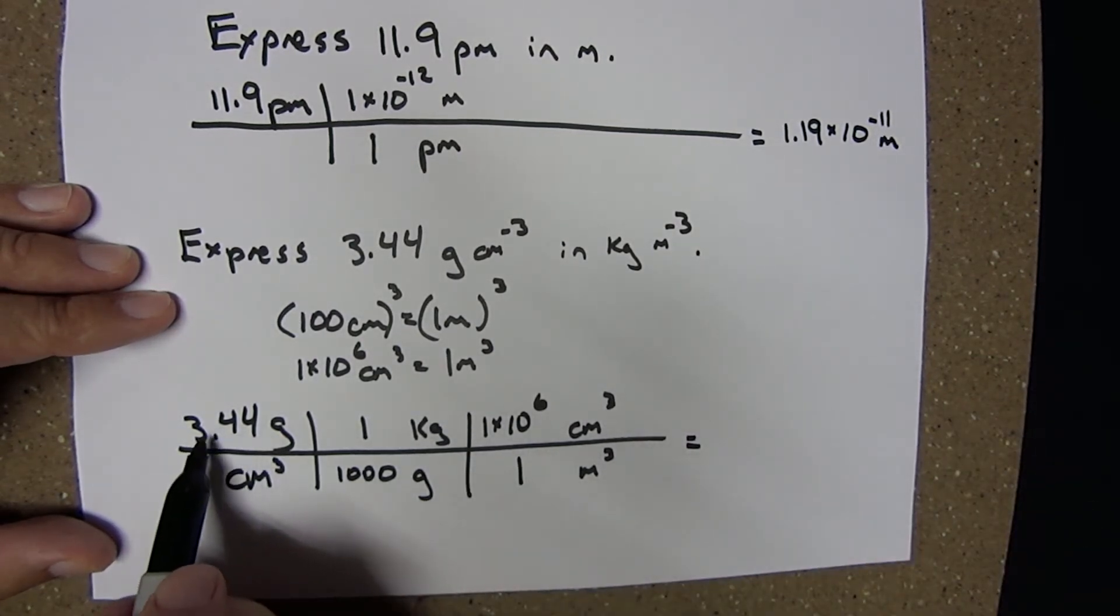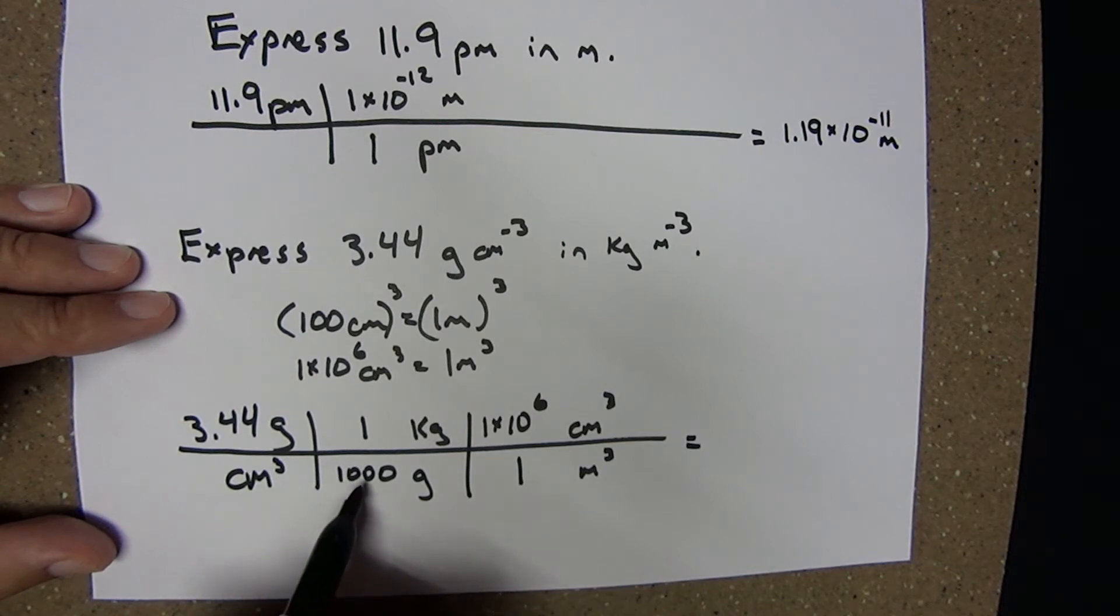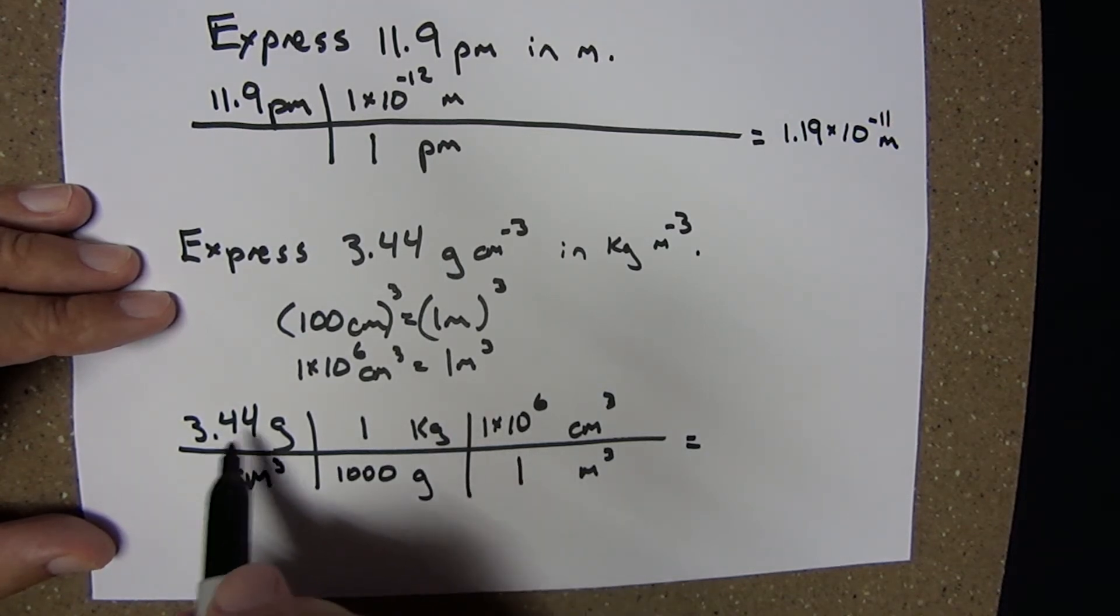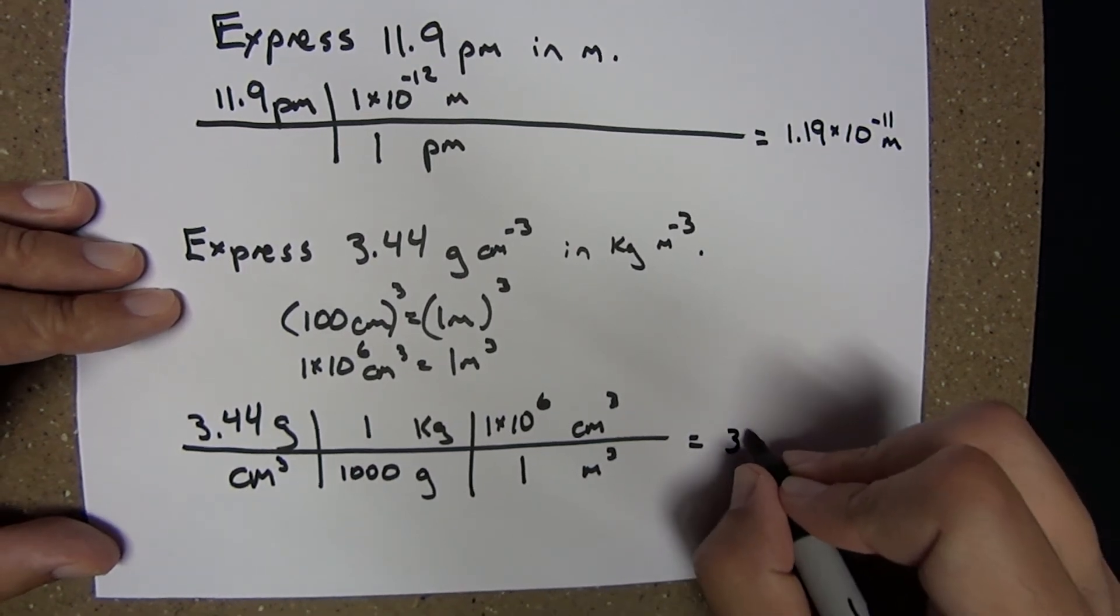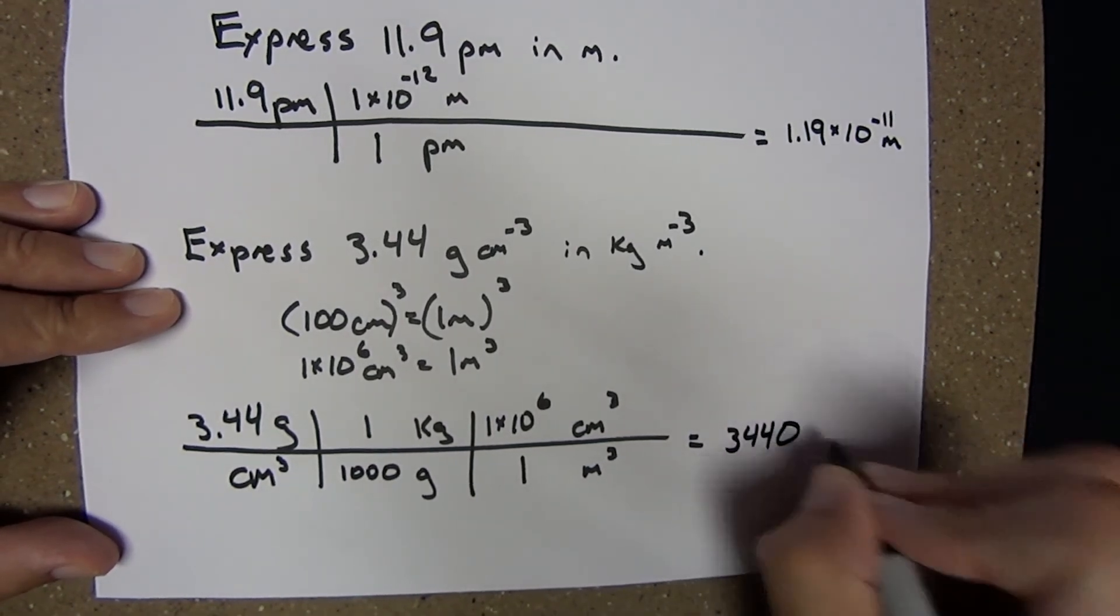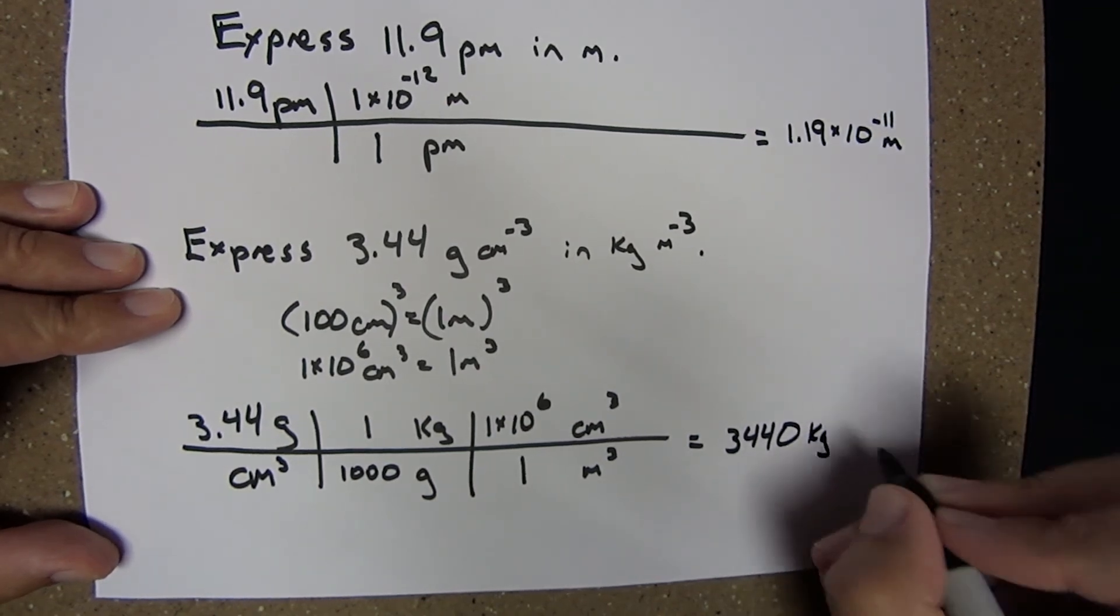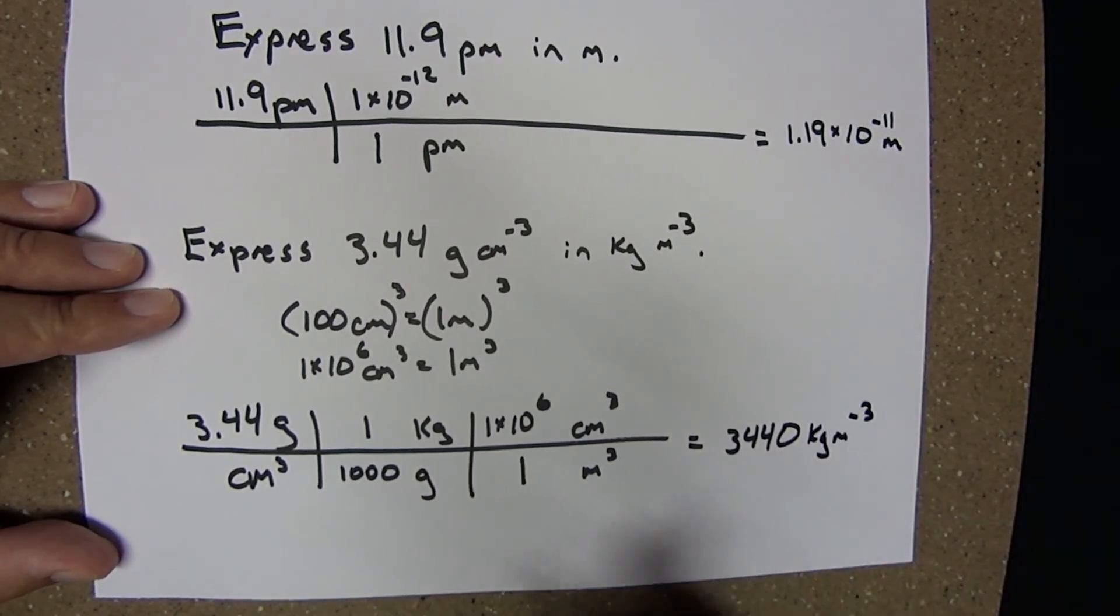Here we're taking 3.44 divided by a thousand, times a million. That's equivalent to 3.44 times a thousand, or 3,440 kilograms per cubic meter.